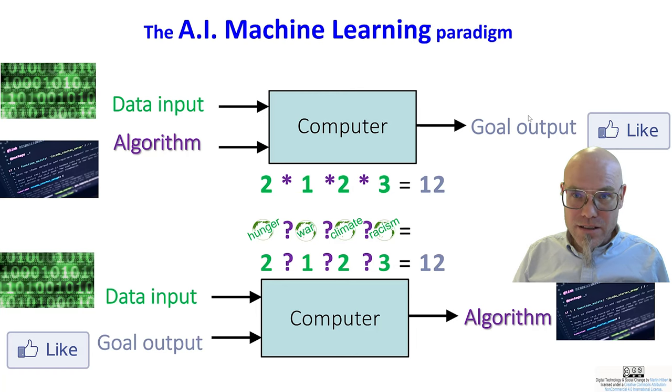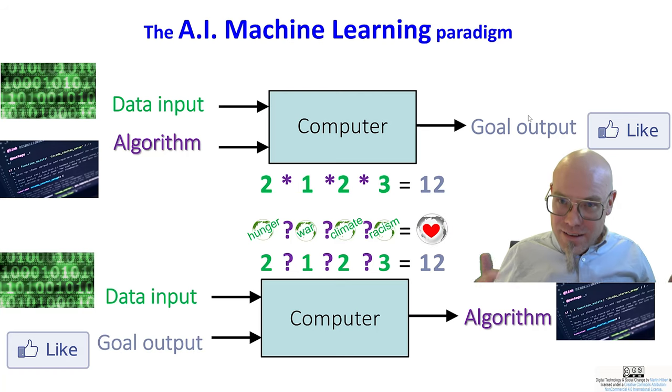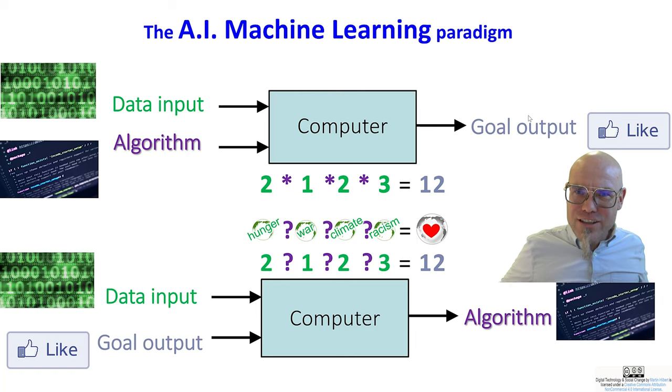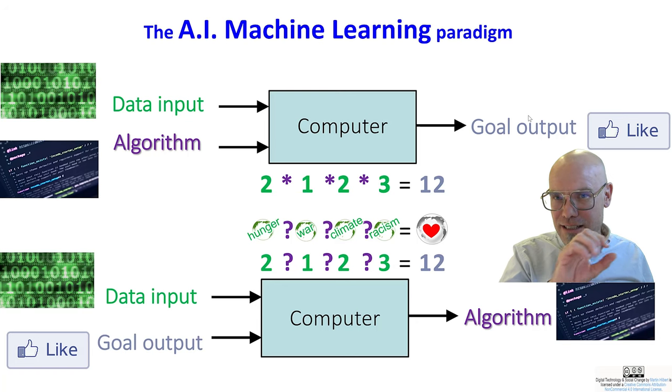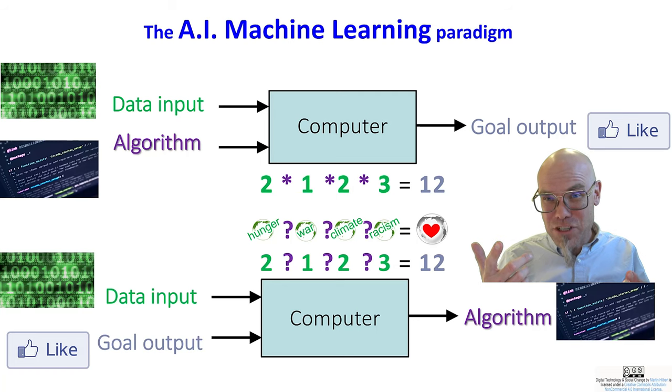For example, you have a world full of hunger, of war, of climate crisis and racism. And what you want to compute is a world full of love. So artificial intelligence, machine learning, if I give you all the data, can you help us to solve the world's problems? Of course, there's a caveat to it, because if you have a machine that can solve problems that we couldn't solve before, that means it extrapolates on data.